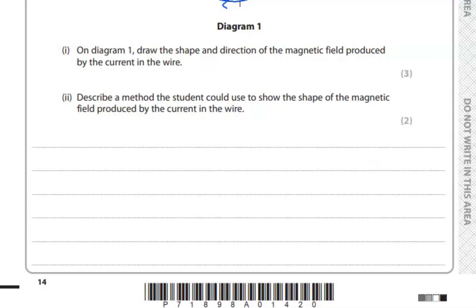Just write two points because it is worth two marks. So first method we can use: we can use iron filings. With the help of iron filings we can line up the magnetic field.